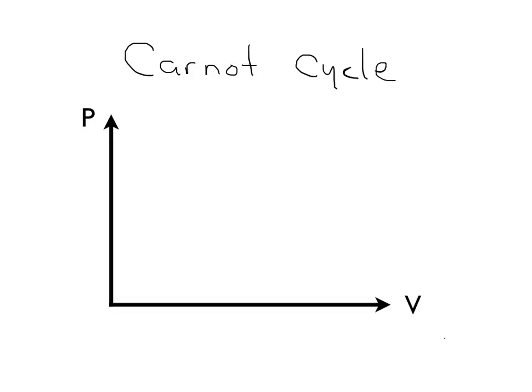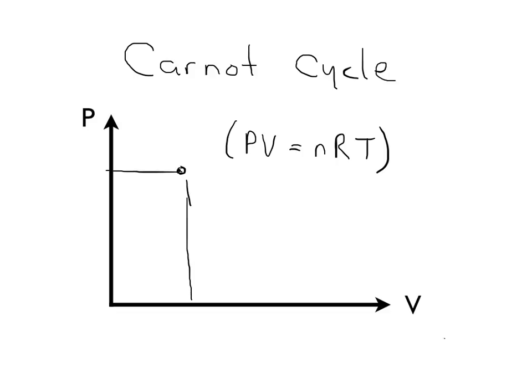The specific thermodynamic cycle that we're going to work through today is called the Carnot cycle. We can draw this using what's called a PV diagram, where the y-axis is pressure and the x-axis is volume. If we choose some point in this PV diagram, then since we know the ideal gas law — PV is equal to nRT — for a given quantity of gas, if we know the pressure and the volume, then we know the temperature of the gas, because PV and n are known and so we can calculate T from that.